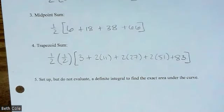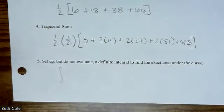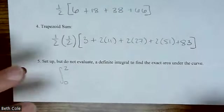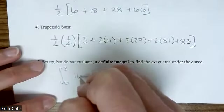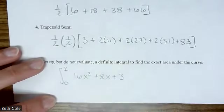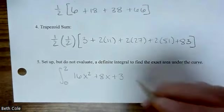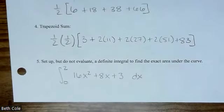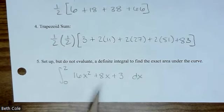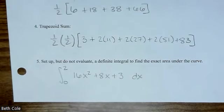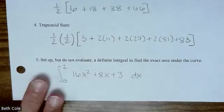Set up, but do not evaluate, a definite integral to find the exact area under the curve. So it would be integral from where to where? What are your boundaries of your interval? 0 to 2. And then it's the function. So 16x² + 8x + 3. And then what goes at the end? dx. Do you remember how we type them in the calculator? It's math 9. As foreshadowing, the lesson for today, I'm going to show you how to evaluate that without the calculator. That's what we're learning today.